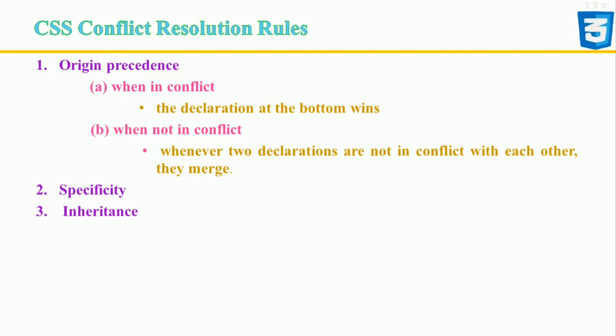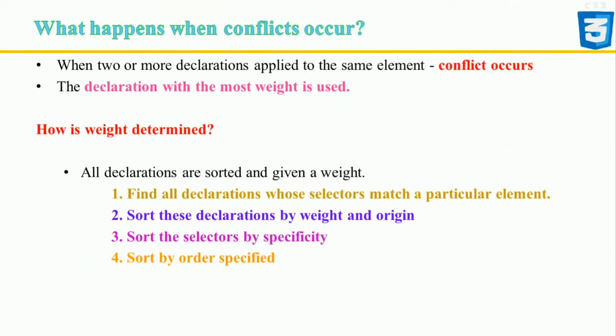Inheritance is the process of receiving values of properties by the child element from its parent element. When conflicts occur and two or more declarations are applied to the same element, the declaration with the most weight is used. When documents load in a browser, all the declarations are sorted and given a weight, then applied to a document based on this weight.